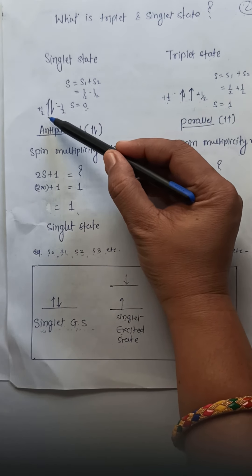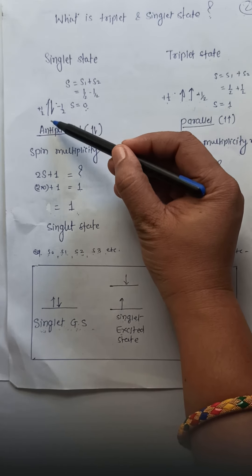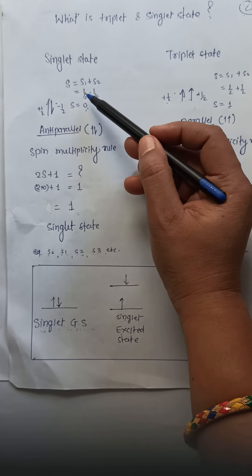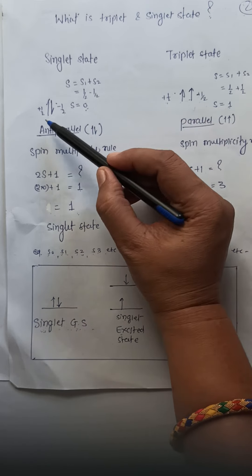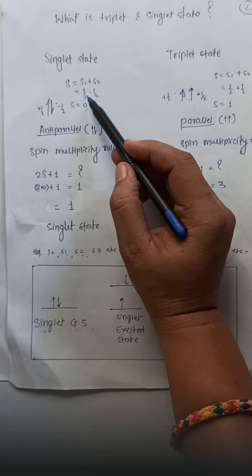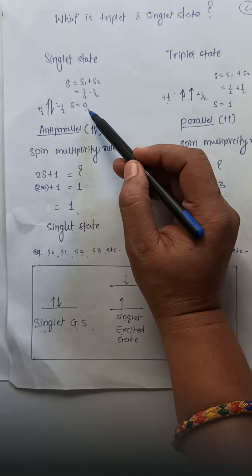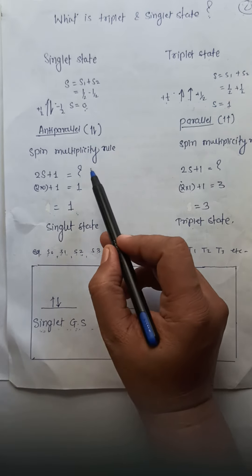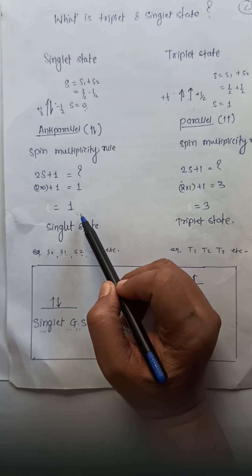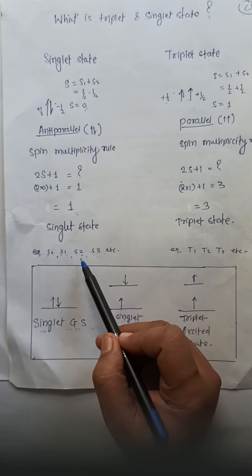In the singlet state, two electrons are present and the directions of these electrons are opposite to each other — they are anti-parallel. We calculate S = S1 + S2, where the value for one electron is +½ and for the other is −½, giving a sum of zero. Applying S = 0 in the spin multiplicity rule (2S + 1), we get a value of one, which is the singlet state, written as S0, S1, S2.